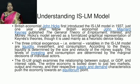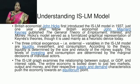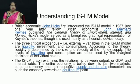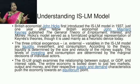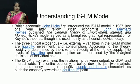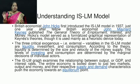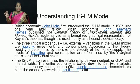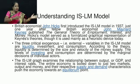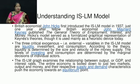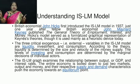The IS-LM graph examines the relationship between output (GDP) and the interest rate. This graph finally shows how to bring equilibrium between the GDP of our economy and the interest rate. The entire economy is boiled down to just two markets — output and money — and their respective supply and demand characteristics push the economy toward an equilibrium point. Demand and supply of money, and demand and supply of goods, must all come to equilibrium.